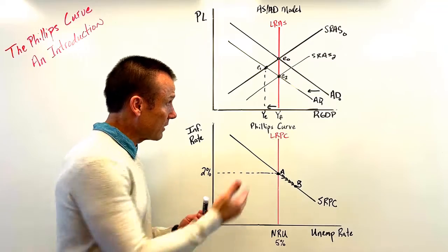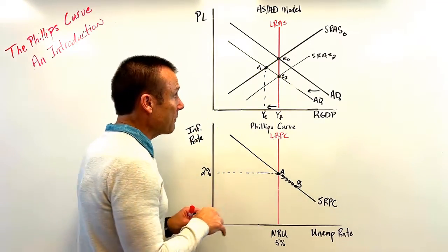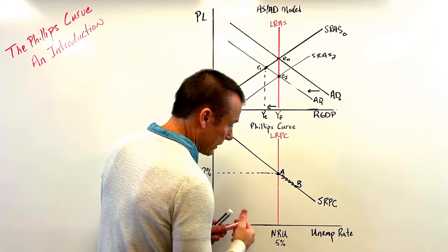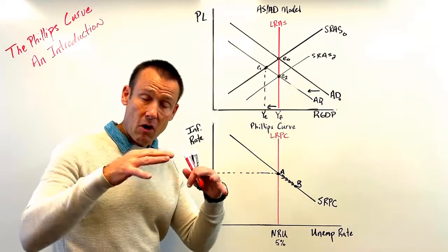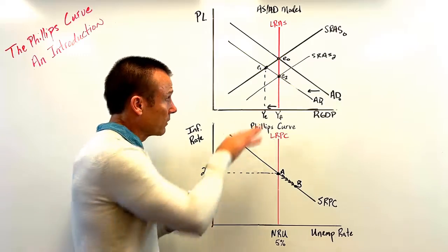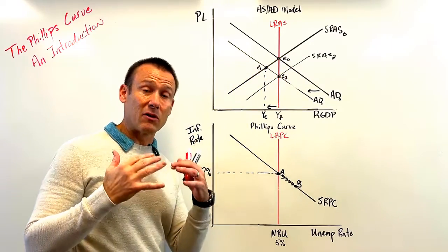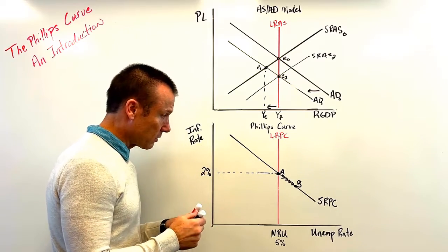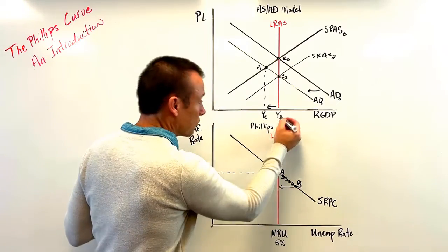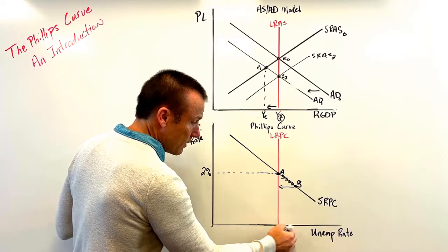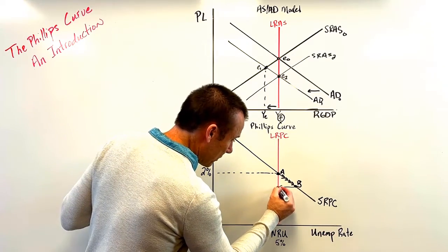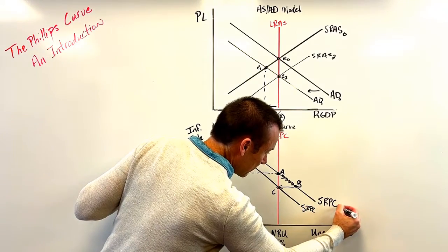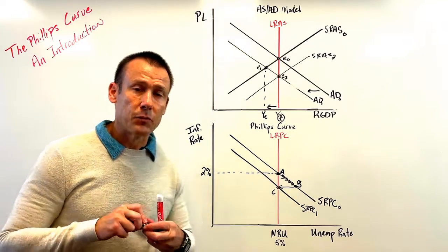From the AS-AD model we return to full employment. On the Phillips Curve graph, returning to full employment means returning to the natural rate of unemployment. As SRAS shifts right, we produce more, hire more workers, so unemployment goes down. The inflation rate also goes down — it definitely doesn't go up. We represent this as returning to the LRPC at the natural rate, placing dot C associated with E sub two, on a new SRPC.